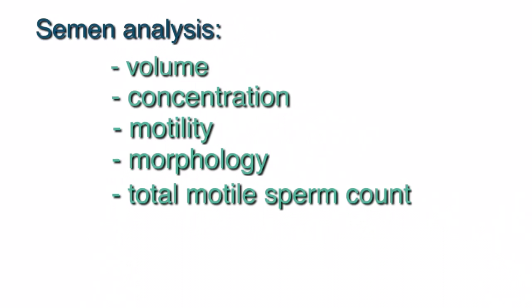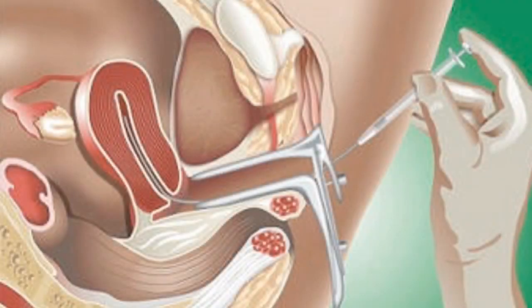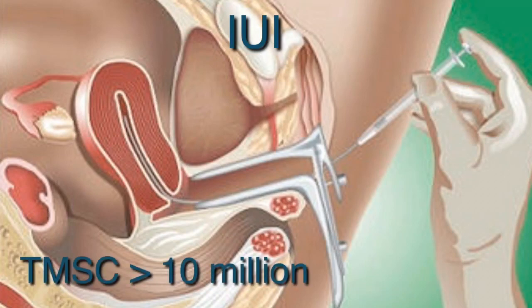The total motile sperm count is derived by multiplying the volume, concentration, and motility together. This number correlates with the probability of conceiving from a treatment called intrauterine insemination, or IUI. The best results would be achieved with an IUI when the total motile sperm count is more than 10 million sperm.